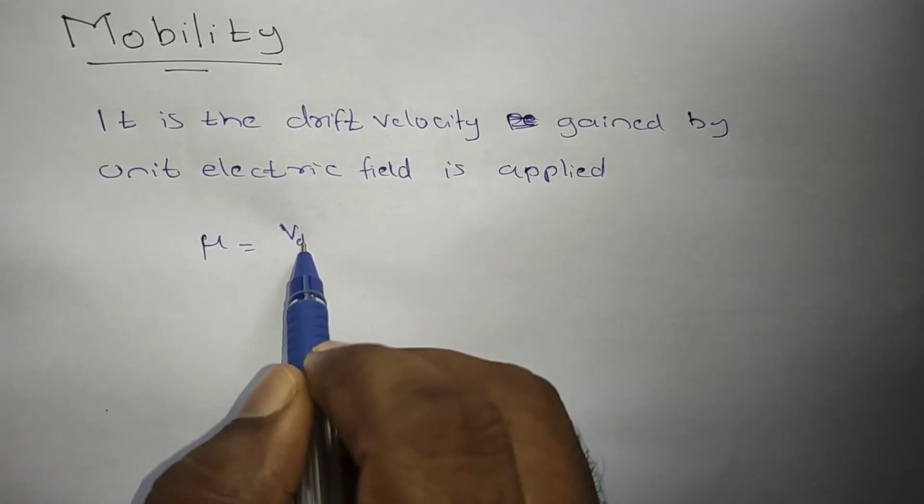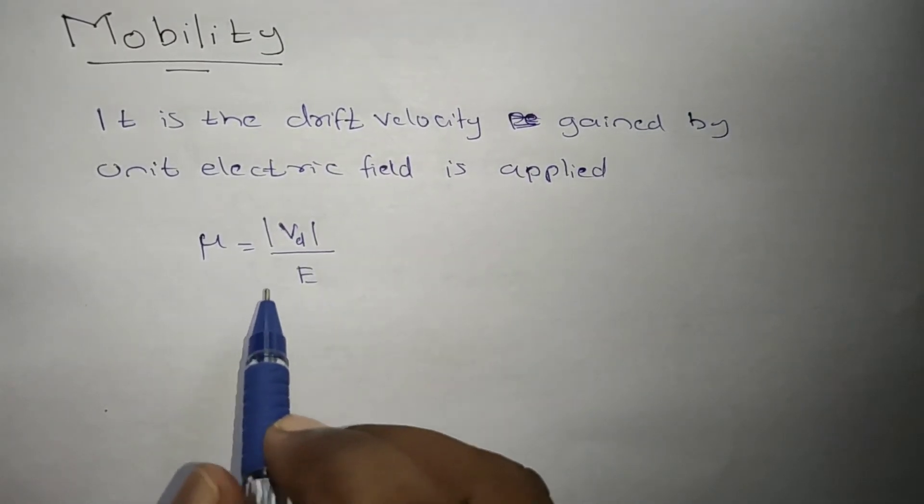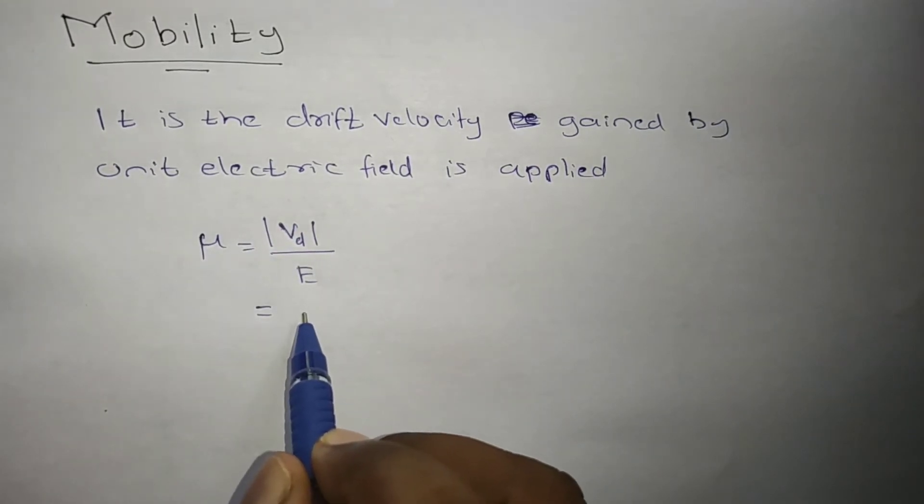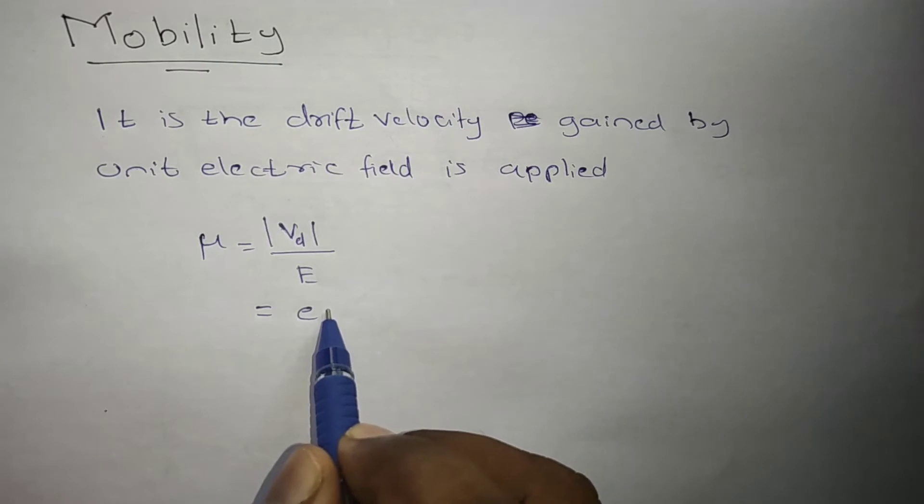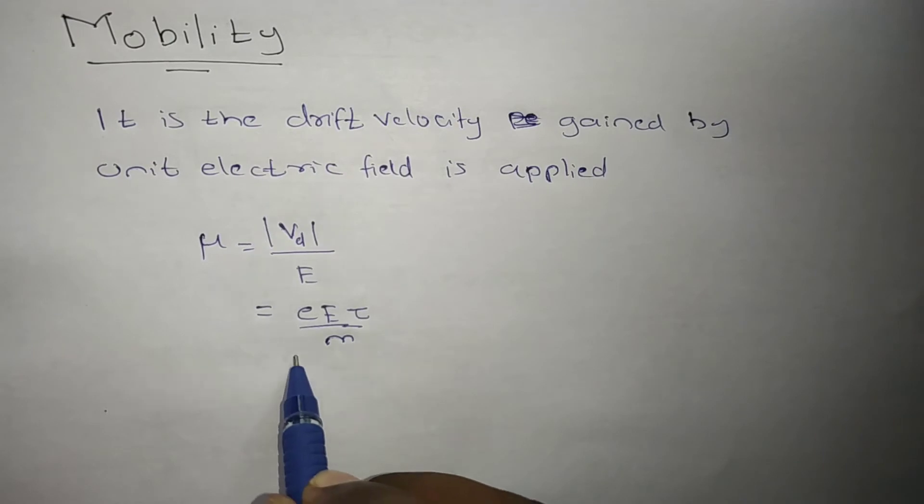So mobility is equal to Vd divided by E. What is the Vd formula? We already got Vd formula is E·τ by m. Everybody know this formula, just substitute it divided by E. So what we will get, μ is equal to e·τ by m.